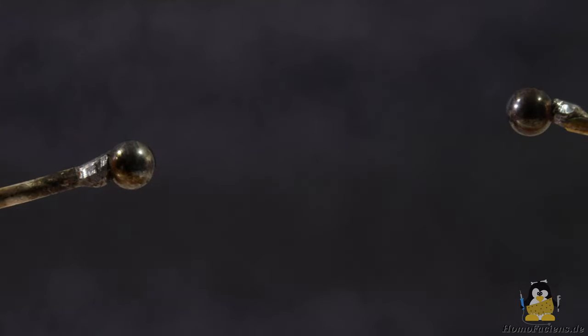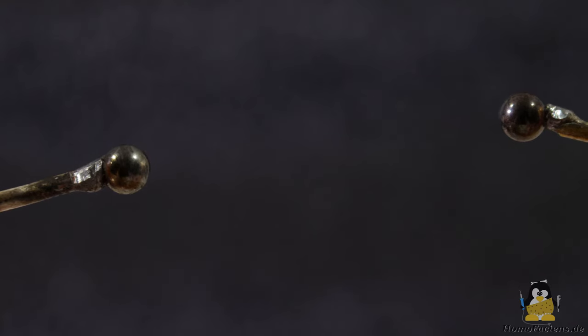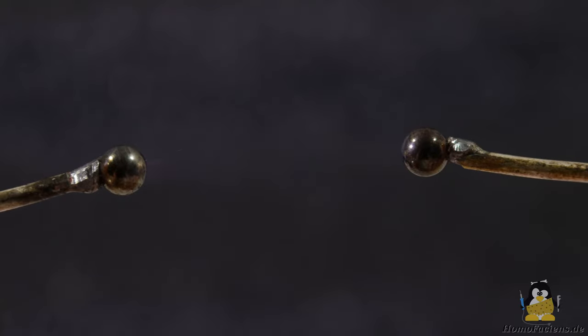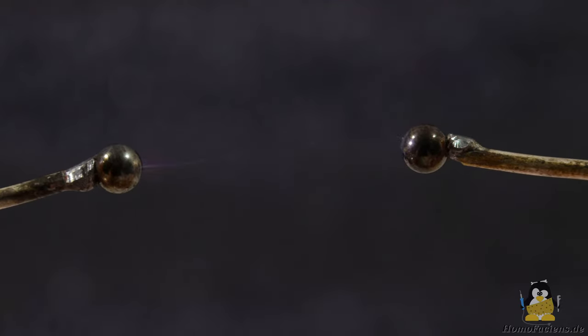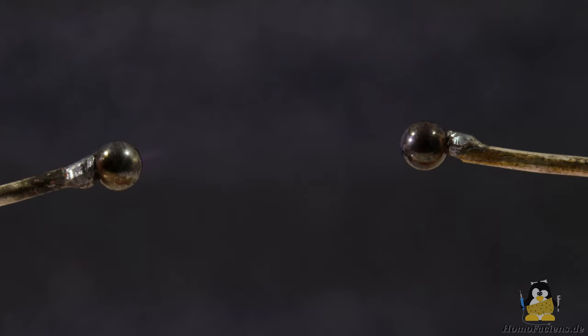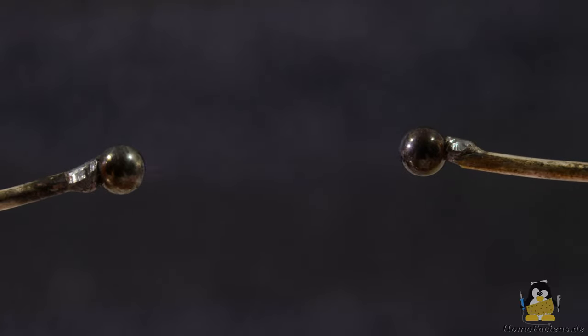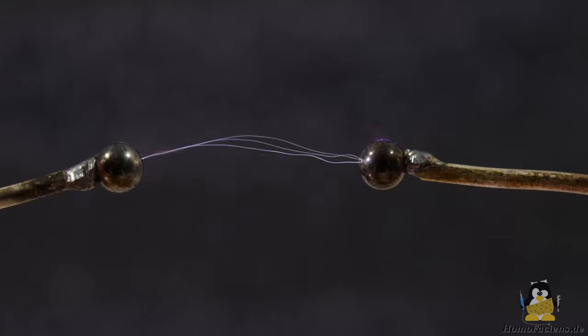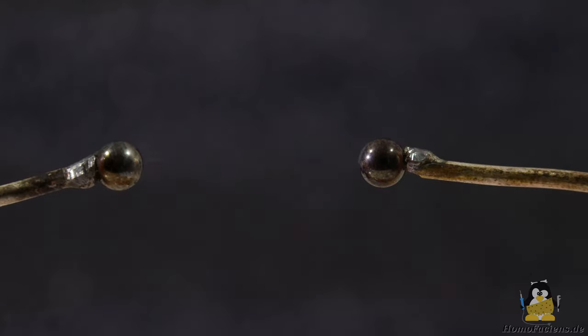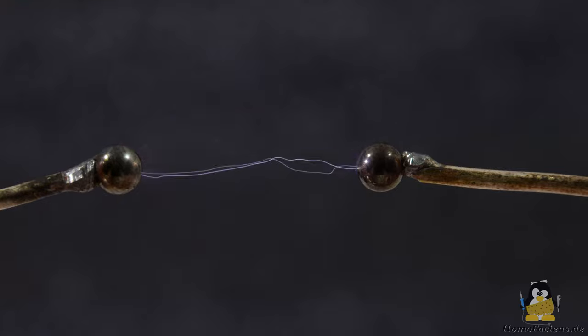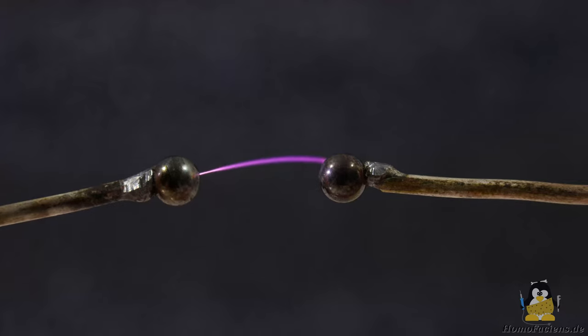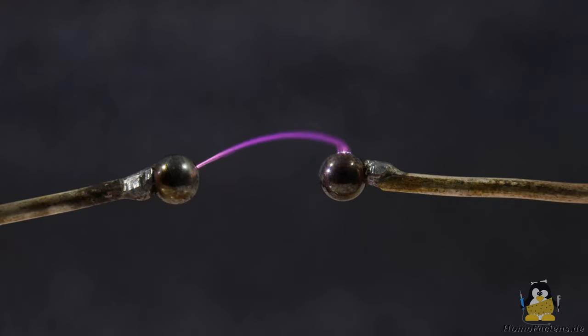So let's change the diameter of the steel balls to just 5mm. Now sparks jump over at a distance of 24mm. If the distance is further reduced, the sparks jump over at a faster rate. With a distance of only 12mm a stable plasma channel forms between the balls which continues to move around the surfaces.